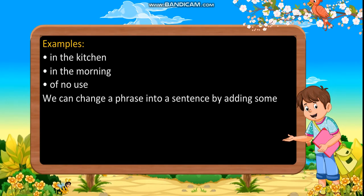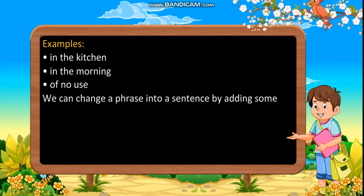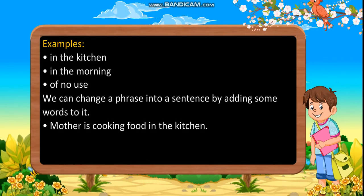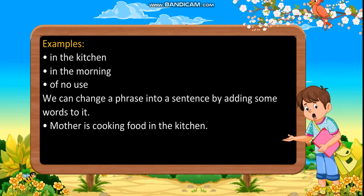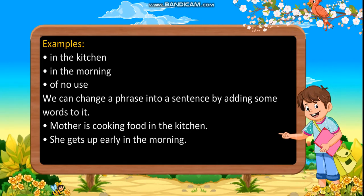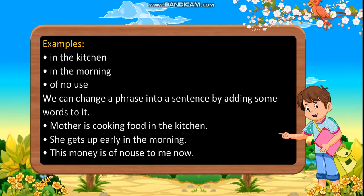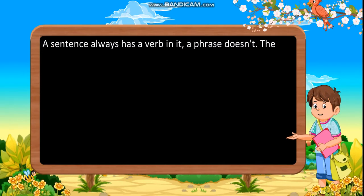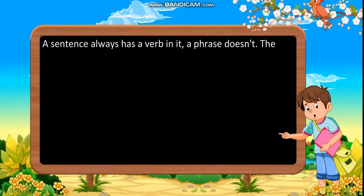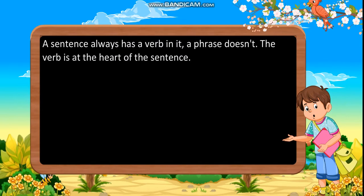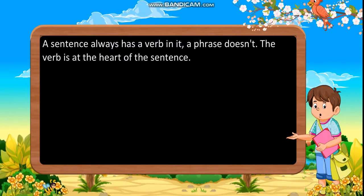We can change a phrase into a sentence by adding some words to it. For example: 'Mother is cooking food in the kitchen.' 'She gets up early in the morning.' 'This money is of no use to me now.' A sentence always has a verb in it, whereas a phrase does not. The verb is at the heart of the sentence.